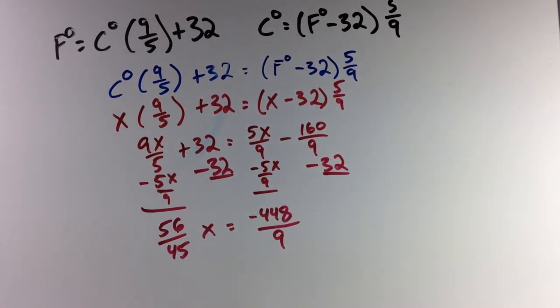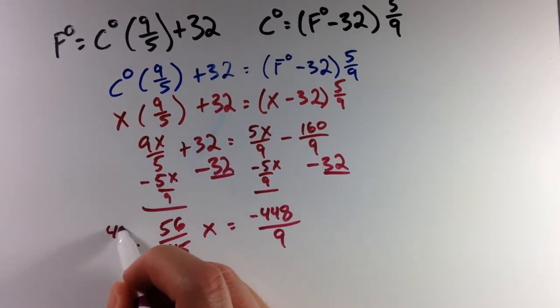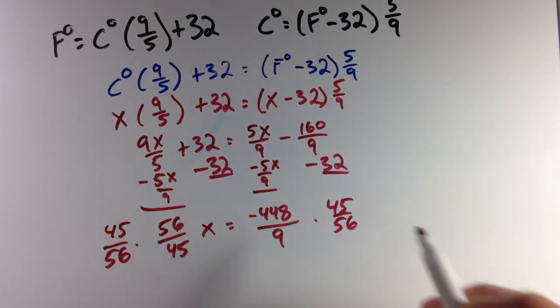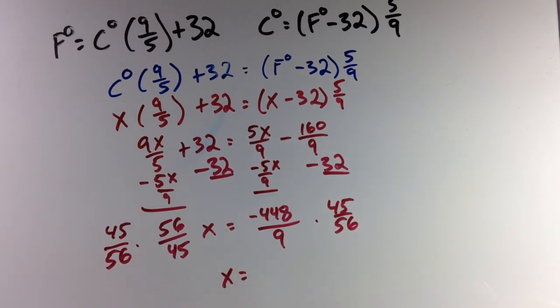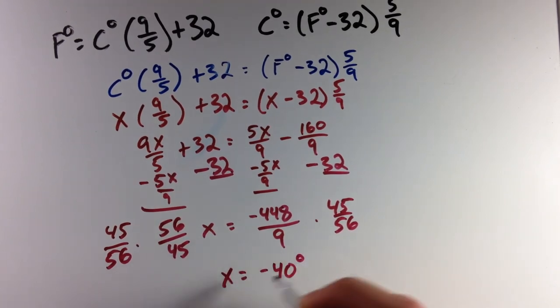And so now at this point, if I want to get x by itself, we just multiply both sides by 45/56. And now we're left with x equals, what's kind of cool is this simplifies right out to be -40 degrees.